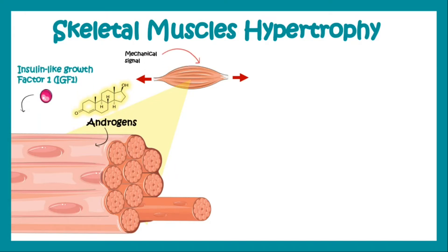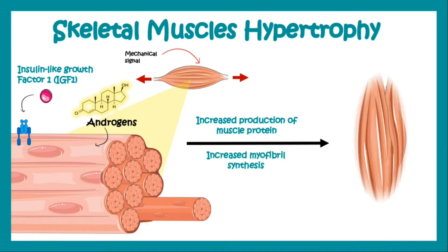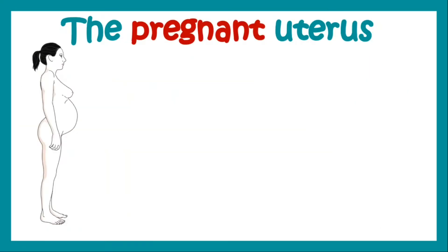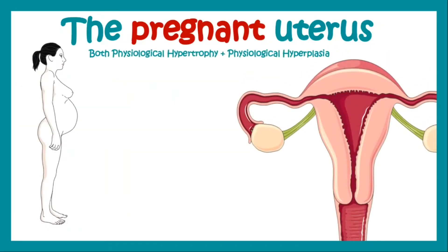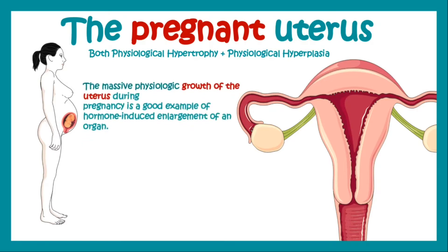These factors lead to increased production of muscle proteins and increased myofibril synthesis, leading to an increase in size of the muscle — or muscle hypertrophy. In the pregnant uterus, both physiological hypertrophy as well as physiological hyperplasia occur. As the baby grows within the womb, the massive physiological growth of the uterus is a good example of hormone-induced enlargement of an organ.